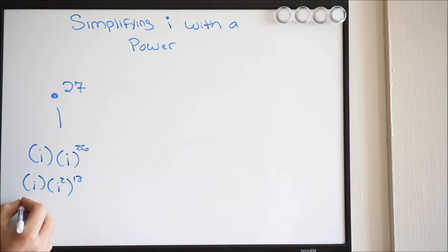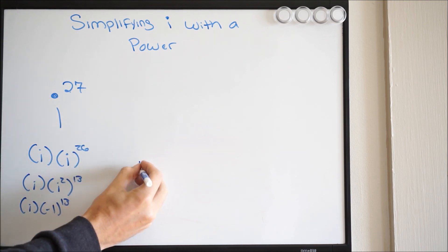So we can go ahead and do this. We have i. i squared is going to be negative 1 to the 13th. So negative 1 to the 13th power is going to be negative 1. Negative 1 times i is negative i.